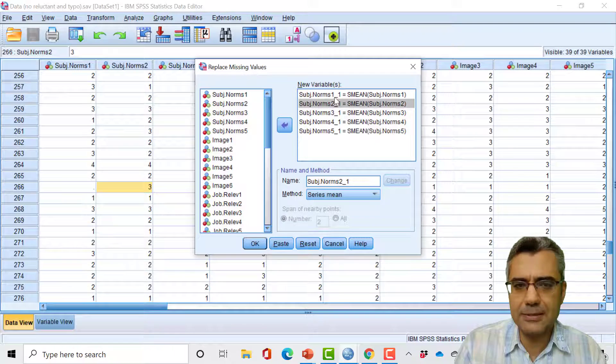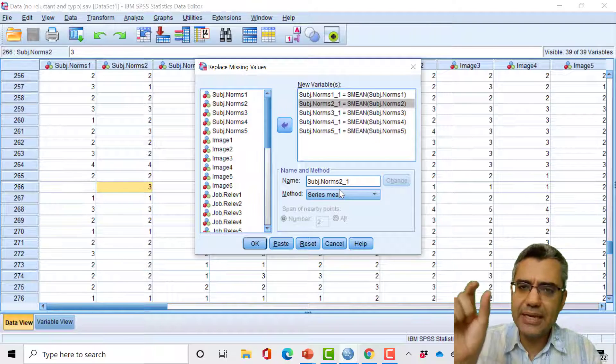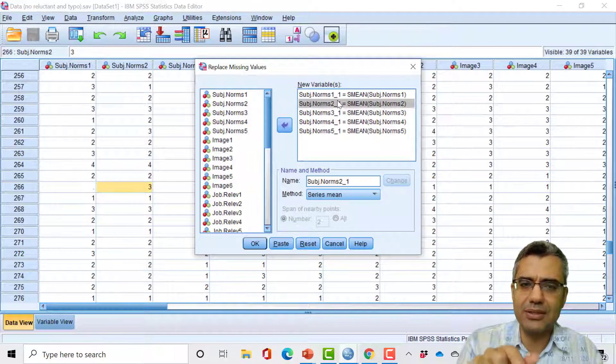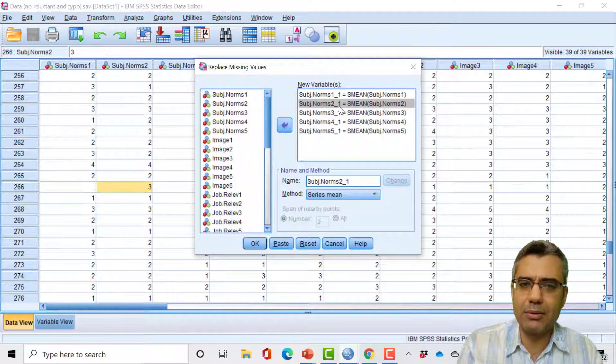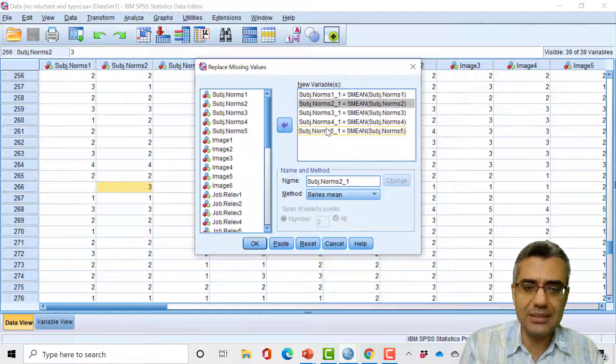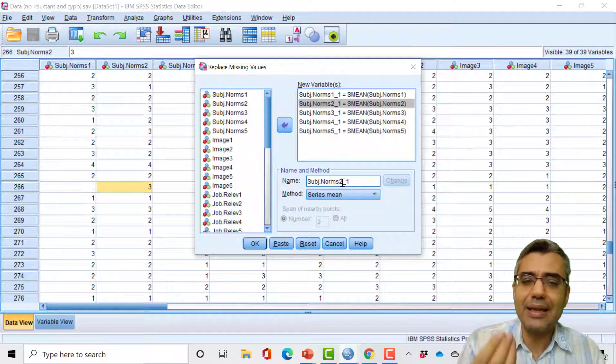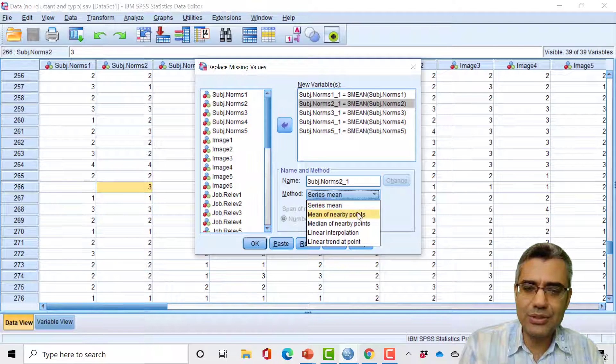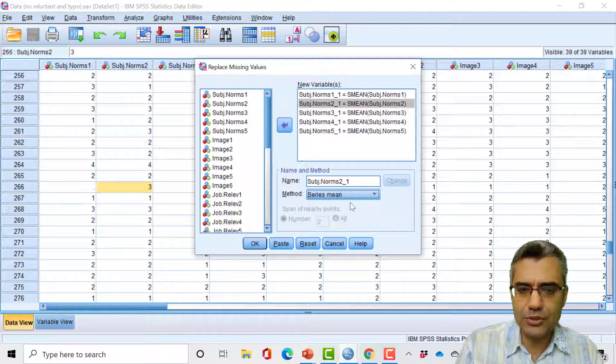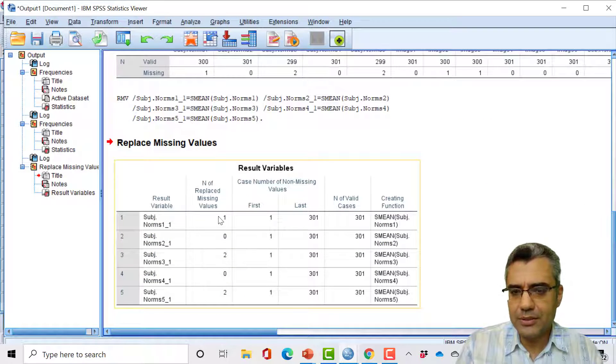The software is giving new names, it just adds underline one at the end of each of these variable names. So it creates new columns in your data file, and these new columns have been named as this variable name underline one. The new cases have no missing data because their missing case has been replaced. Here you select Series Mean and I just keep it as Series Mean and hit OK.